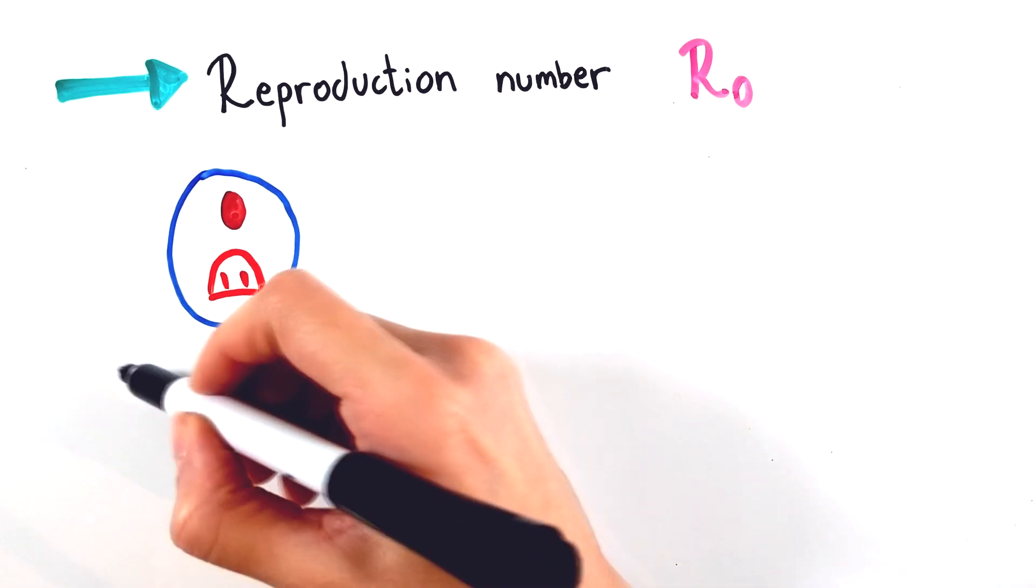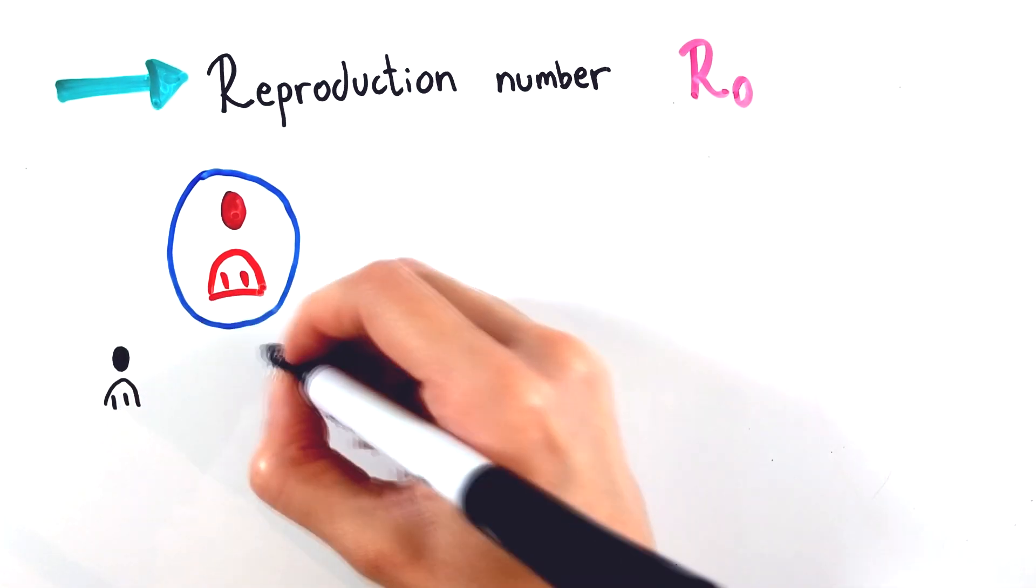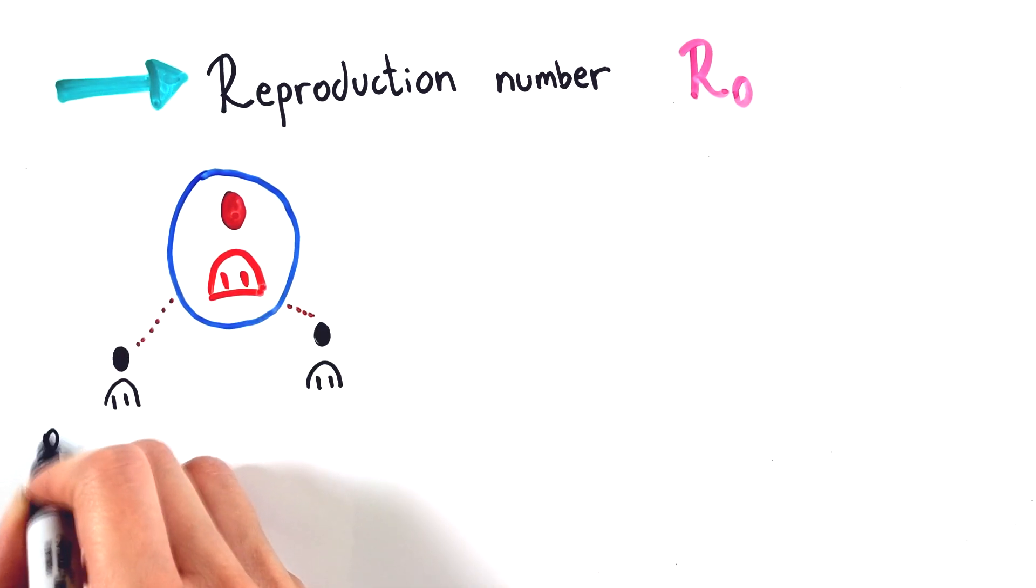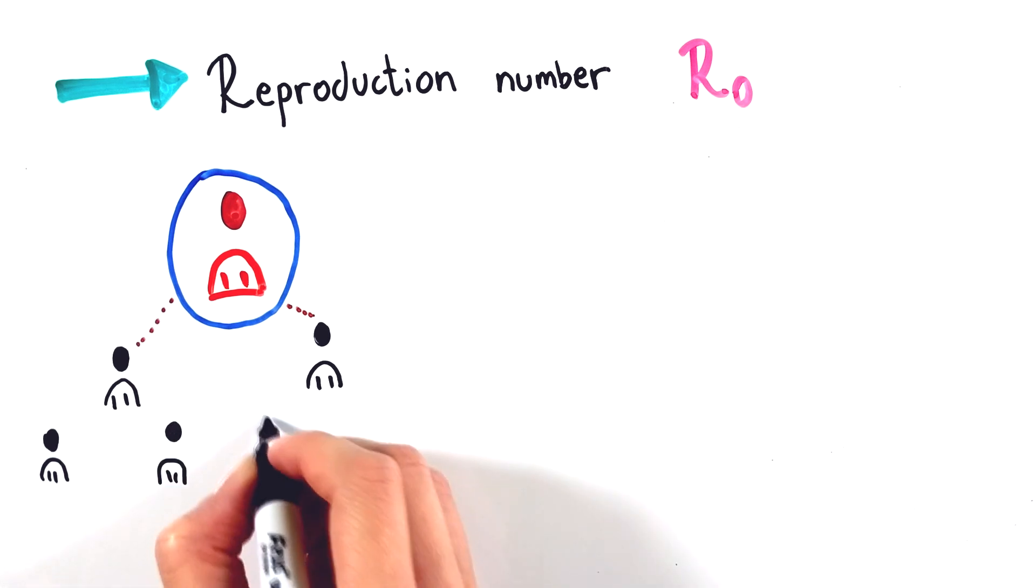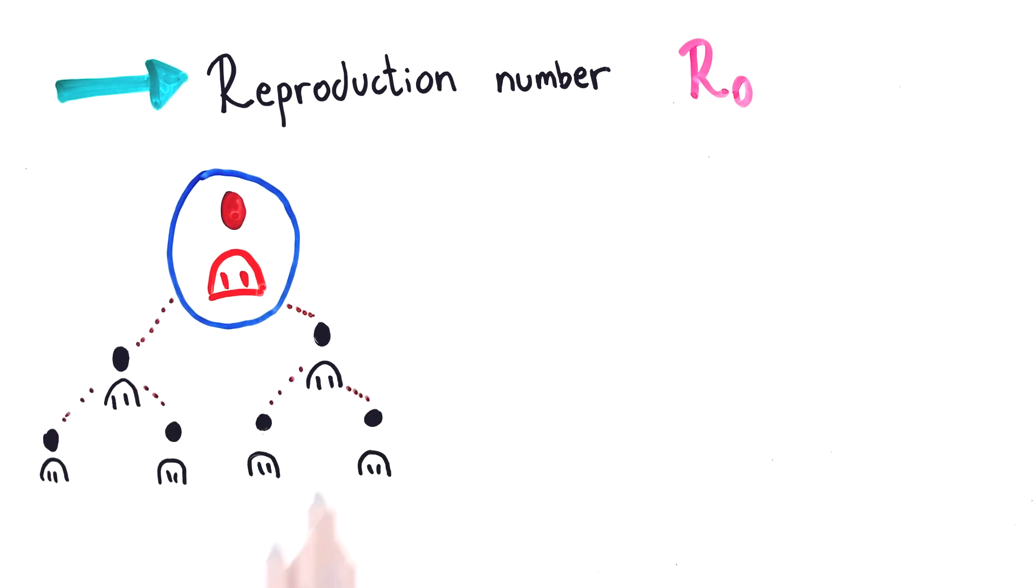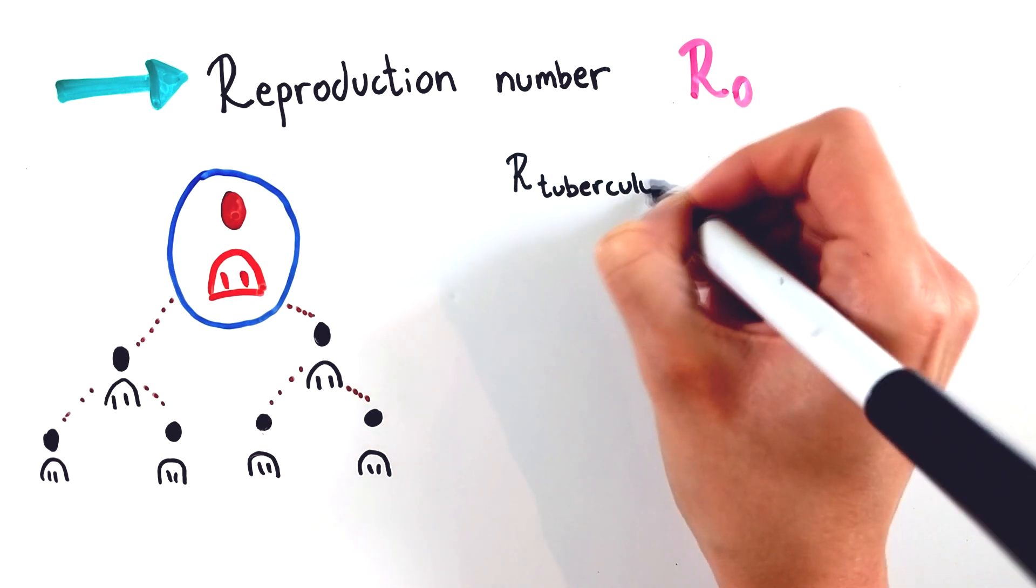The disease spread rate is affected by different factors. A basic measure for tracking infectiousness of a disease is called the reproduction number, also known as R0. This number indicates how contagious an infectious disease is. It tells us the average number of people who are affected by one contagious person.